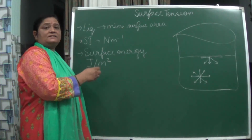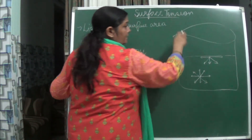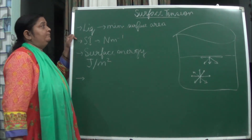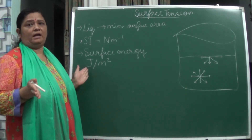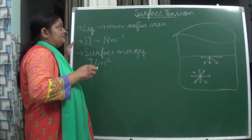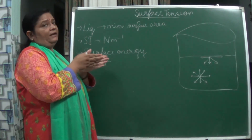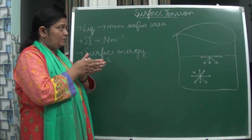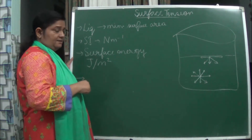Now let us study about surface tension. Surface tension means tension created at the surface. The liquid tries to minimize its surface area, and as a result it will be accommodated in a small area only.